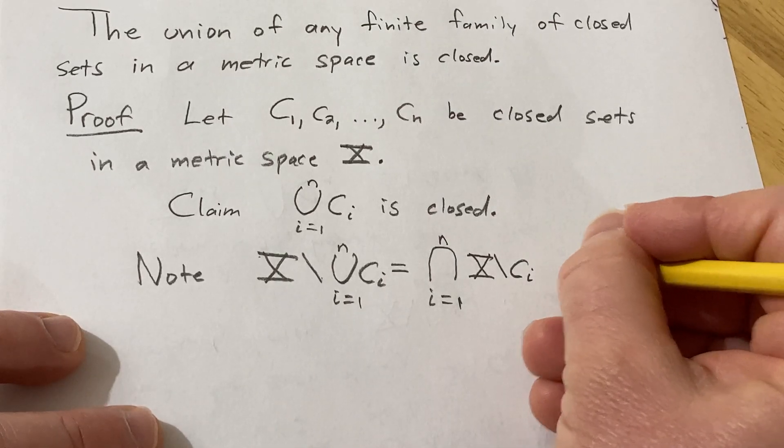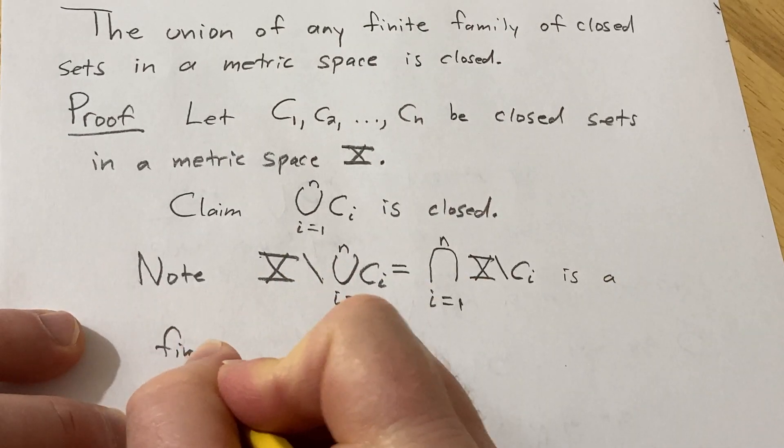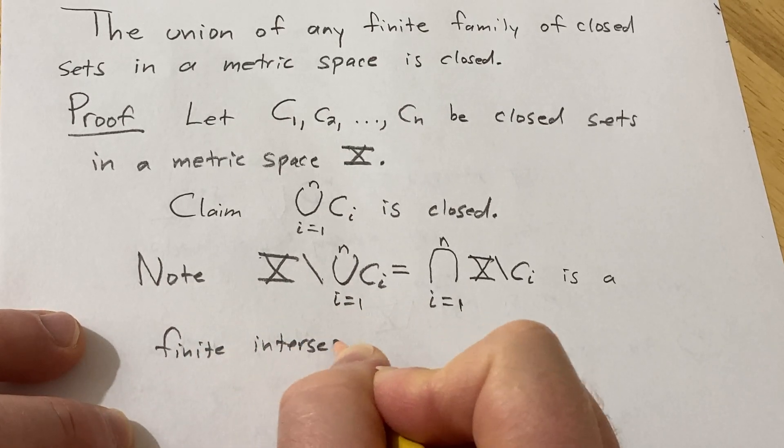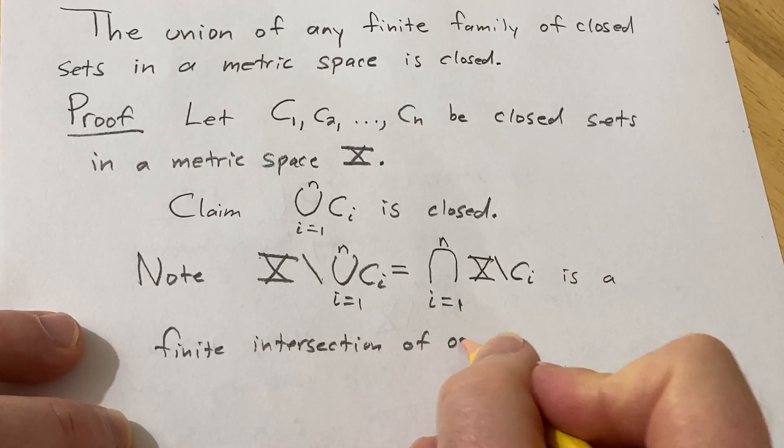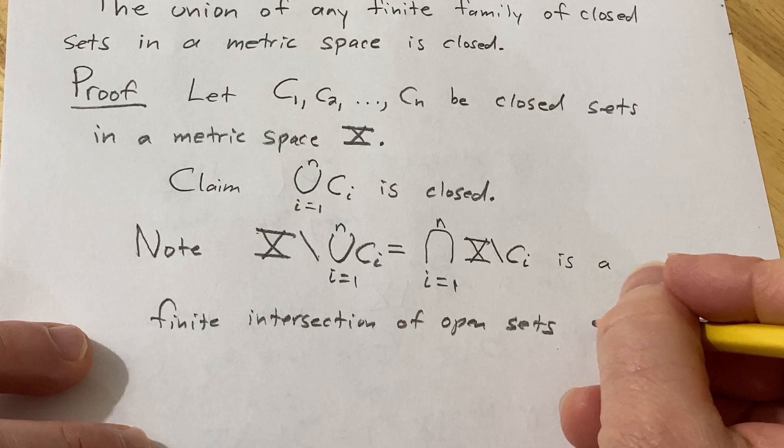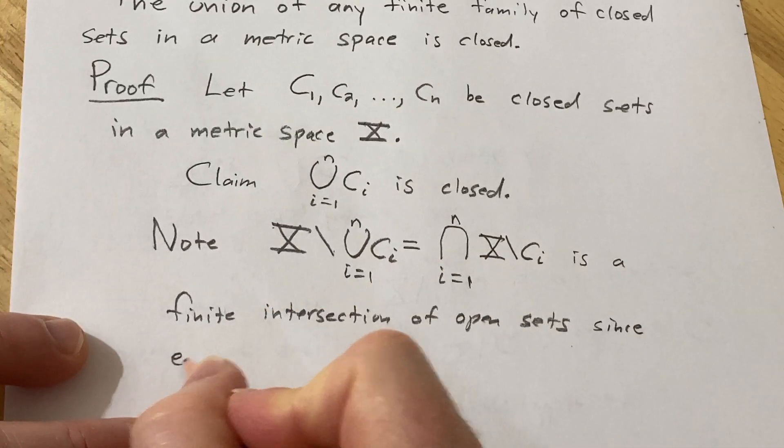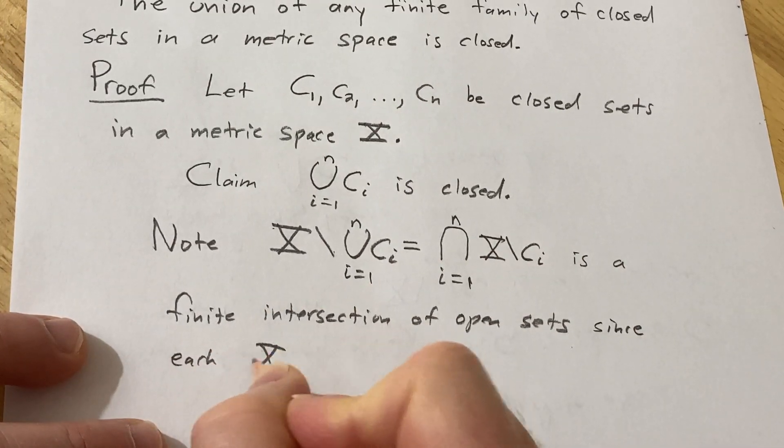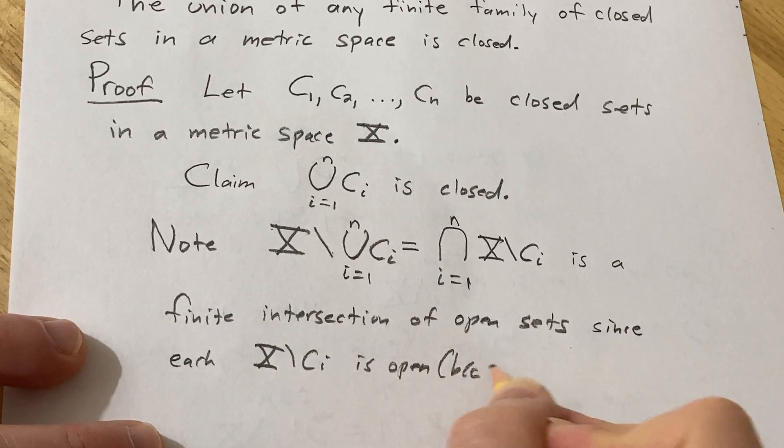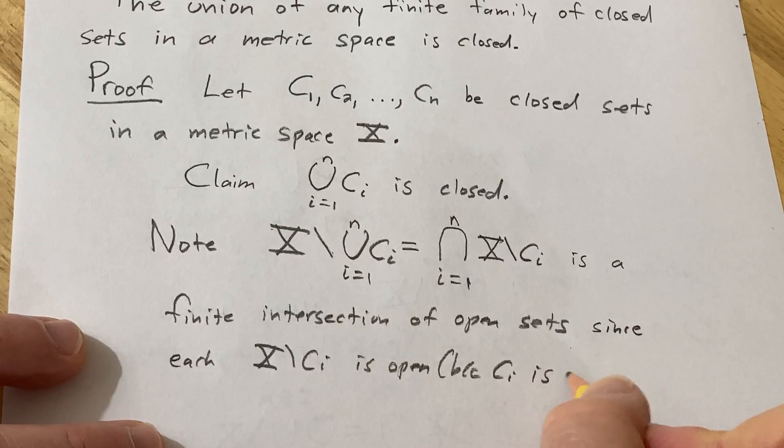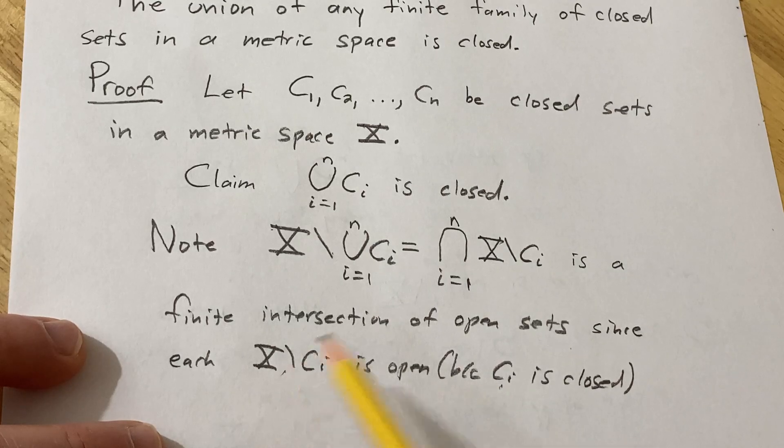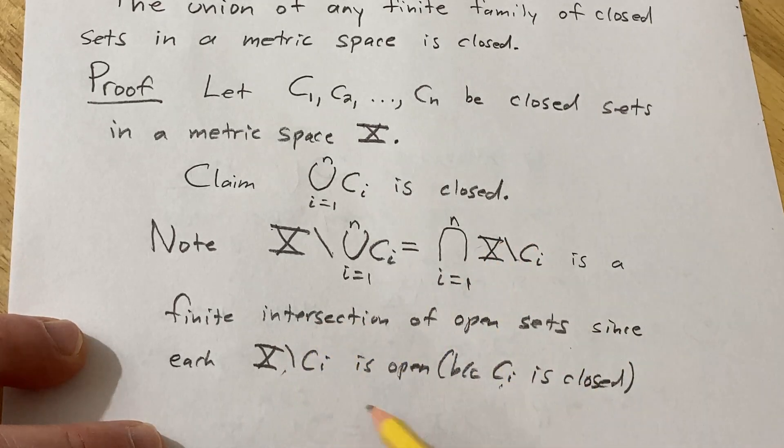And this is a finite intersection of open sets since each X set minus C i is open. And this is because C sub i is closed. Right, so each of these is closed, so the complements are open. So we have a finite intersection of open sets.